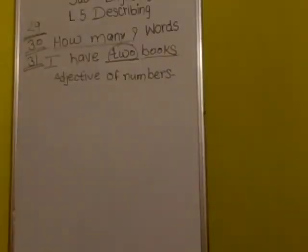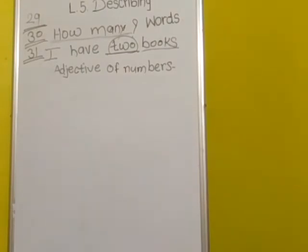All these describing words show the number of the nouns, and that is why they are called adjectives of number. Numbers are also describing words and they tell us how many people, places, animals, and things there are. It is not only qualities but also numbers that describe nouns. Earth has one moon. The year has 12 months. We have five fingers on each hand.